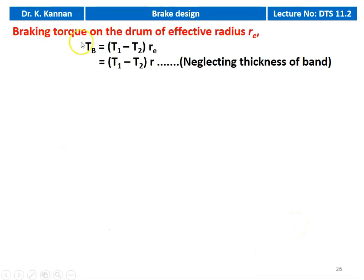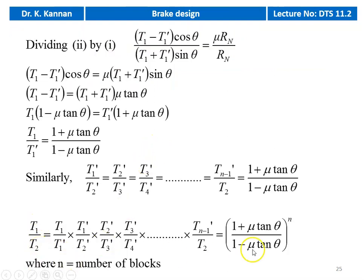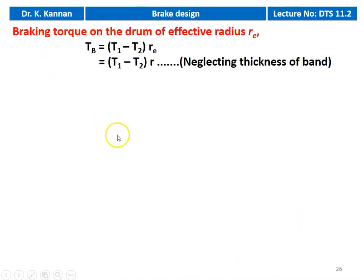We can now calculate T1 and T2 and substitute into the braking torque equation. The braking torque on the drum of effective radius: Tb = (T1 − T2) × Re, or neglecting the thickness of the band, Tb = (T1 − T2) × R. Using T1/T2 and the known tensions, we calculate the braking torque by multiplying by the radius of the brake drum.